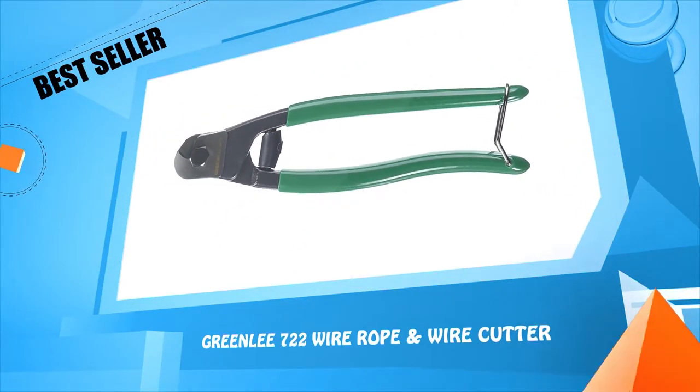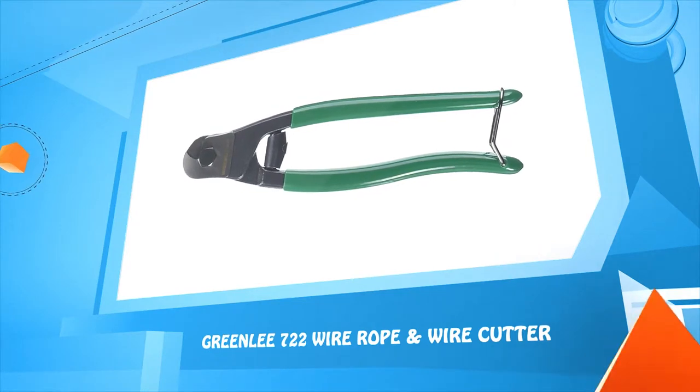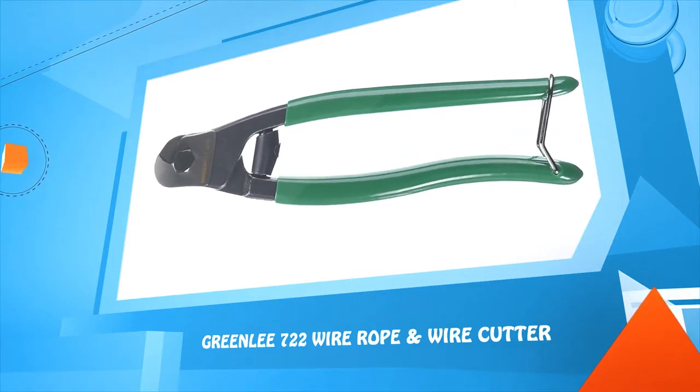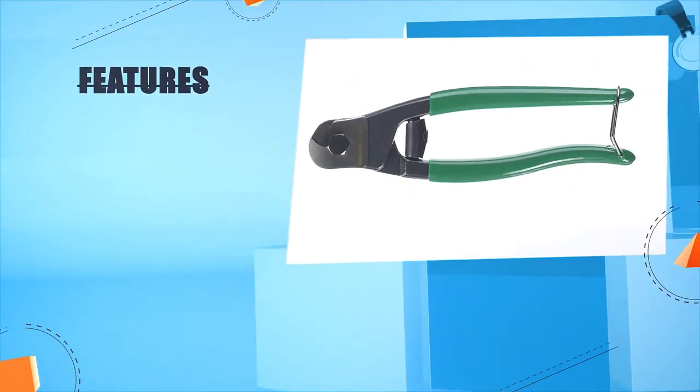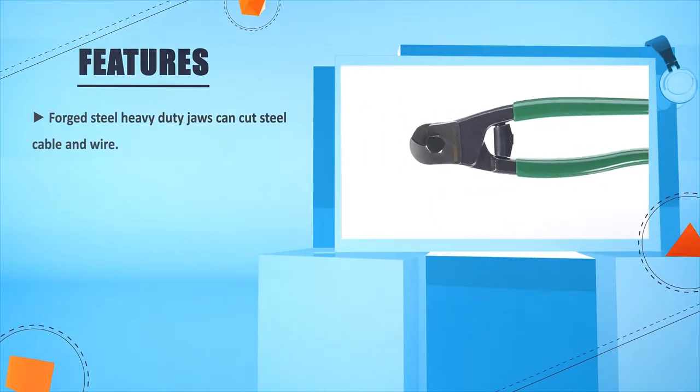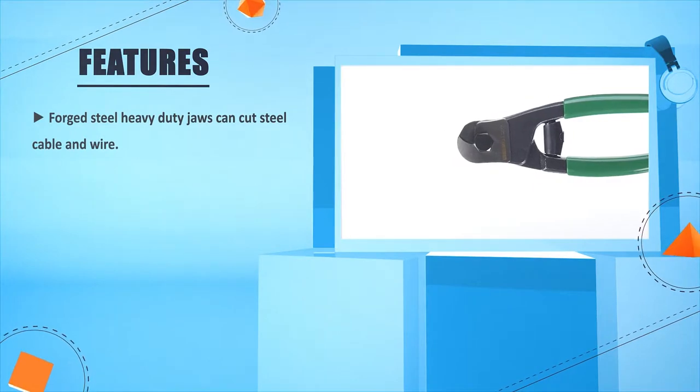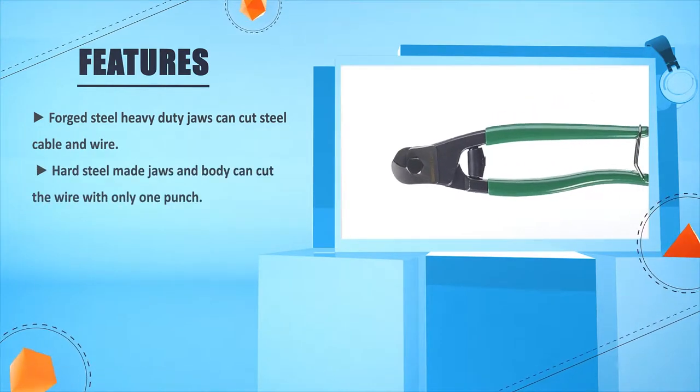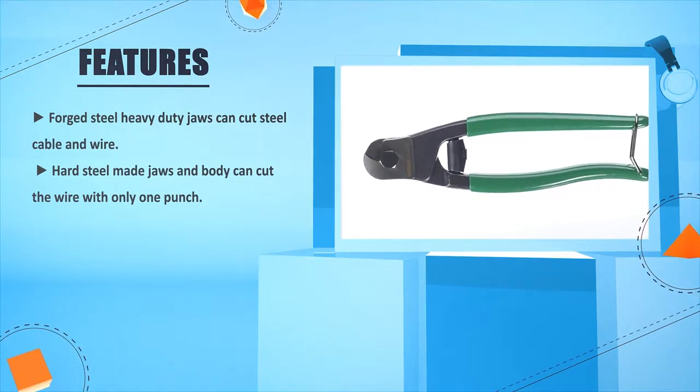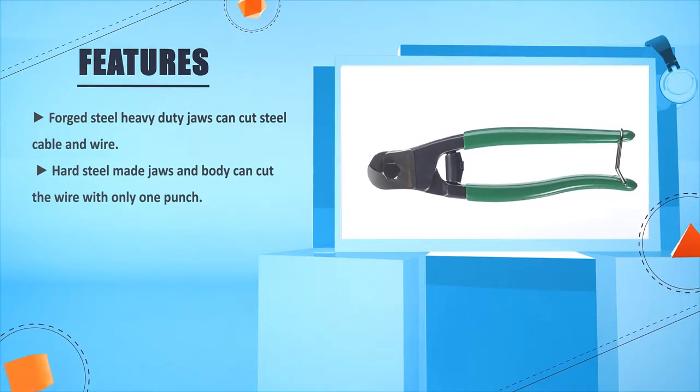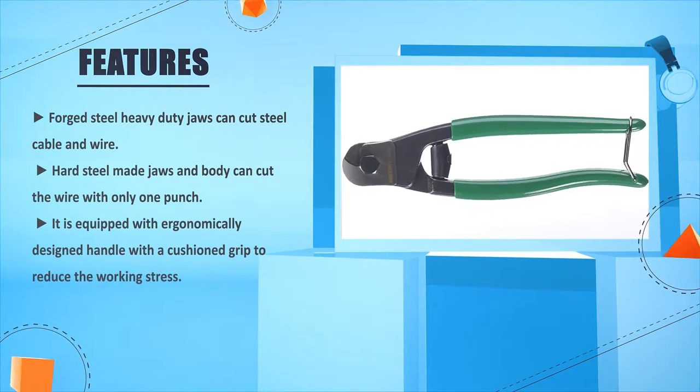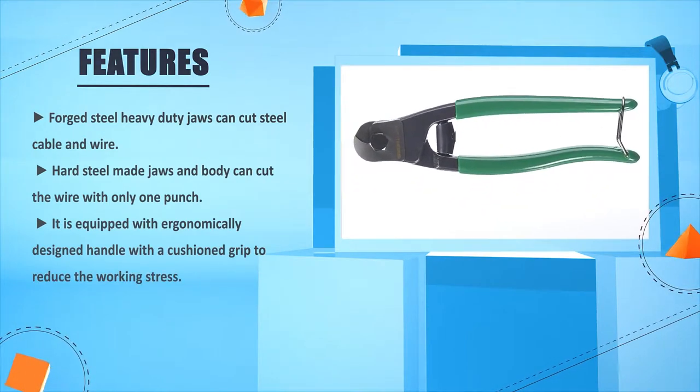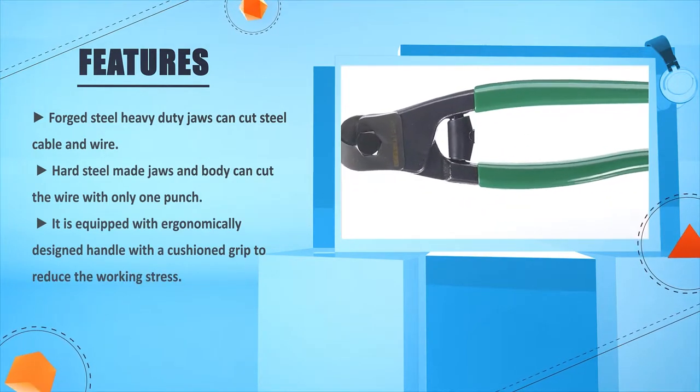Number 4: Greenlee's 722 Wire Rope and Wire Cutter. Forged steel heavy duty jaws can cut steel cable and wire. Hard steel made jaws and body can cut the wire with only one punch. It is equipped with ergonomically designed handle with a cushioned grip to reduce the working stress.